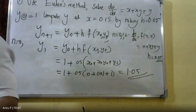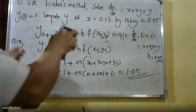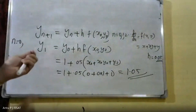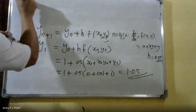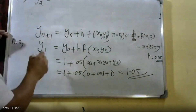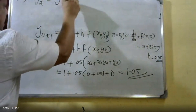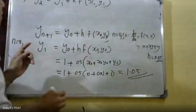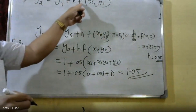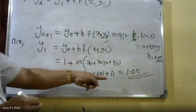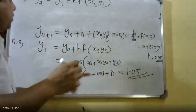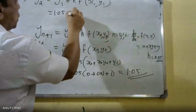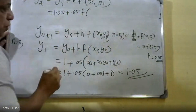Similarly, we can find the next value y_2. To find y_2, put n = 1. Therefore y_2 = y_1 + h · f(x_1, y_1). Here y_1 = 1.05 and h = 0.05, so y_2 = 1.05 + 0.05 · f(x_1, y_1).